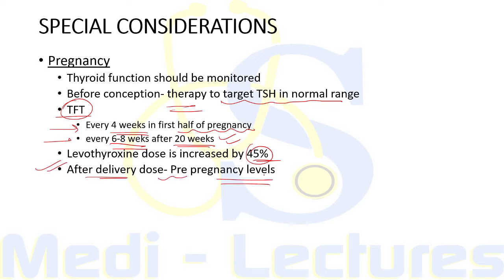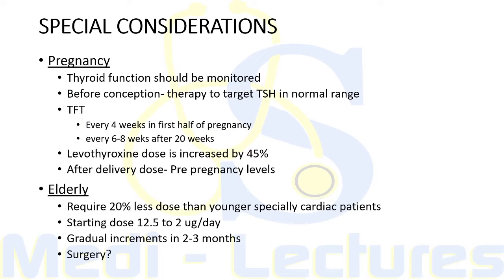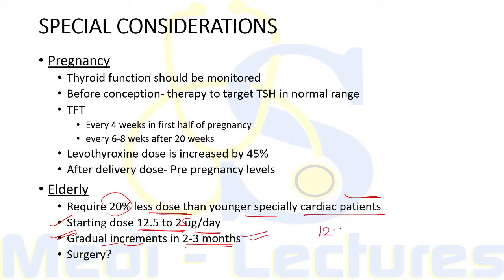Elderly patients require 20% less dose than younger patients, especially those with cardiac issues. The starting dose is 12.5 to 25 microgram per day with gradual increments as per TSH within two to three months, increasing in doses of only 12.5 to 25 microgram at a time. If emergency surgery is required, it can be safely performed, but routine surgery is not indicated until euthyroidism is achieved.